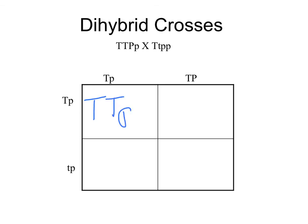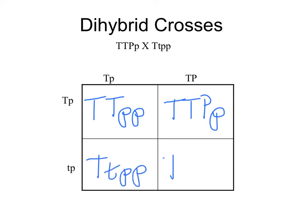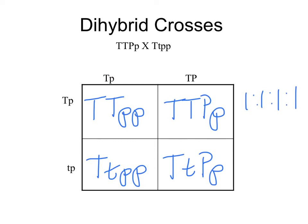So we just fill in these four squares: big T big T little p little p; big T big T big P little p; big T little t little p little p; big T little t big P little p. All of these are different genotypes. We'd say the ratio is one to one to one to one — one fourth each. That's the genotype.